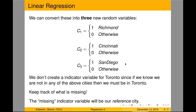I have four cities, but I'm going to convert it into three new variables. You'll see by the end of the video why it makes sense to leave the fourth one out. These are indicator variables: C1 is one for Richmond, zero otherwise; C2 is one for Cincinnati, zero otherwise; C3 is one for San Diego, zero otherwise. This does eat up degrees of freedom, so keep that in mind. We don't create an indicator variable for Toronto since we know if we're not in any of the above cities, then we must be in Toronto.